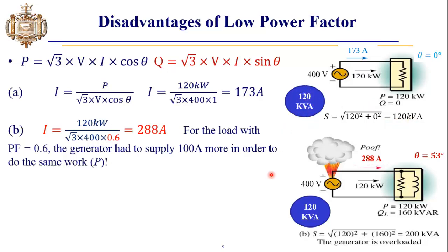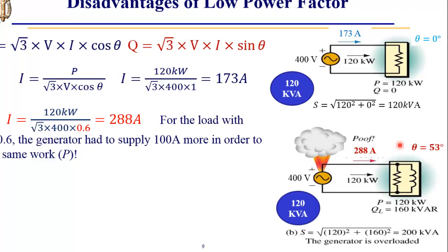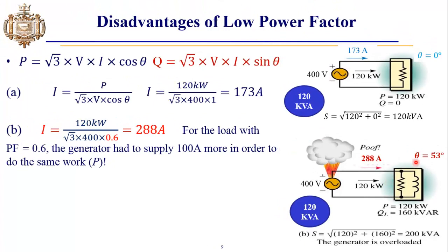Now let's assume that we have a load which is a combination of a resistor and inductor, and whose θ, which is the angle between the voltage and current, is now 53 degrees. So the total power factor, which is cos θ of this load, is now 0.6. Again, generator capacity is 120 kVA and the voltage is 400 volts.